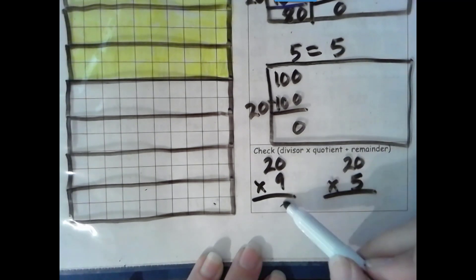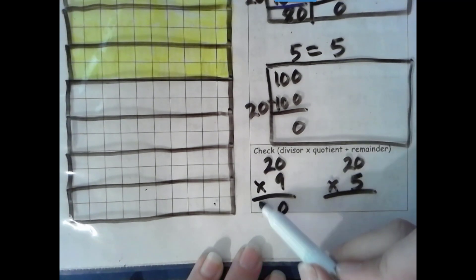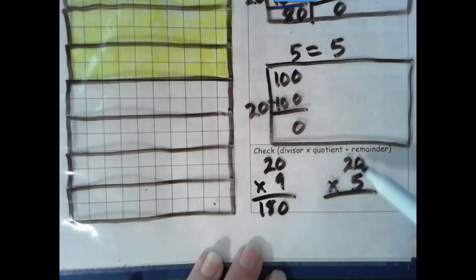9 groups of 0 is 0. 9 groups of 2 tenths is 18 tenths. 5 groups of 0 is 0. 5 groups of 2 tenths is 10 tenths. 100 that matches our dividend so that checks. 180 that matches our dividend so that checks.